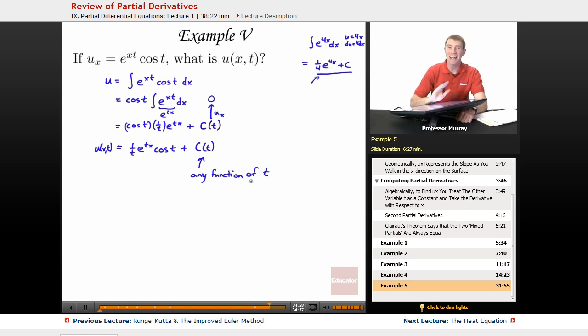Any function of t could be your c of t here. And the reason I can put any function of t in there, cosine t, e to the t, natural log of t, t squared, is because if I took the x derivative, it would just cancel away to zero. So that's my most general form for my u of xt.